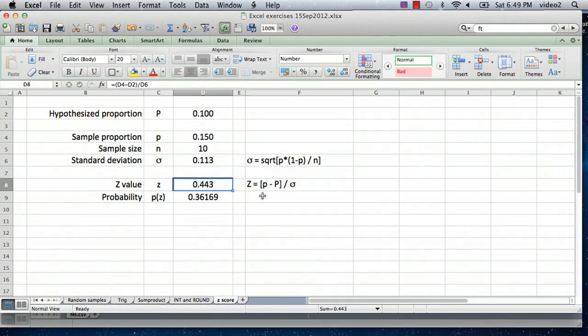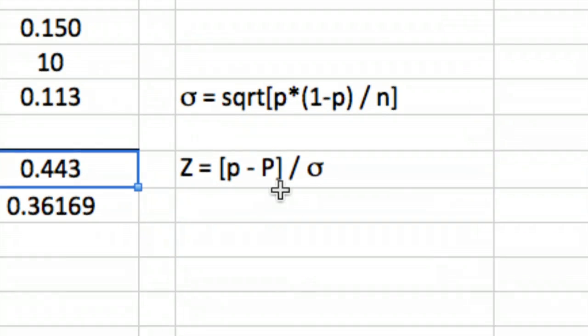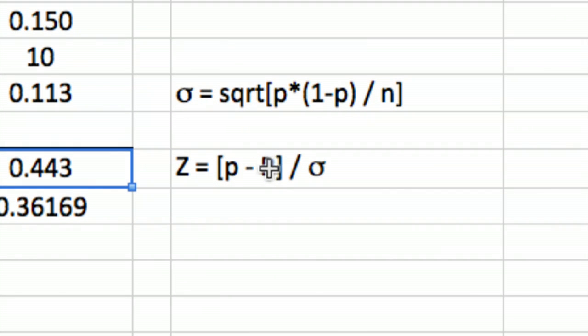So the formula for the z value is the sample proportion minus the hypothesized proportion, all of that divided by the standard deviation. And in our case, it's 0.443.